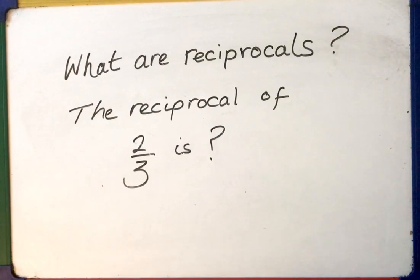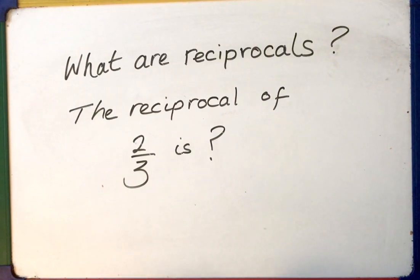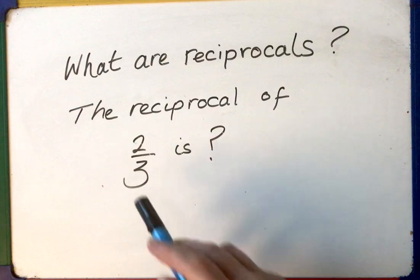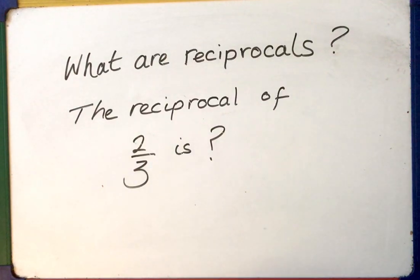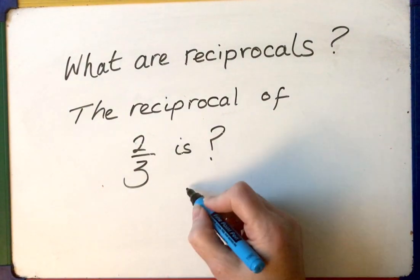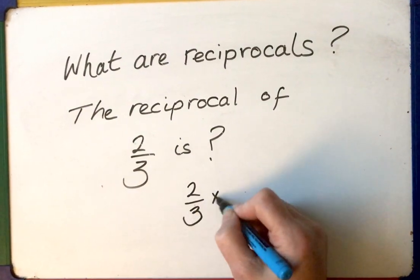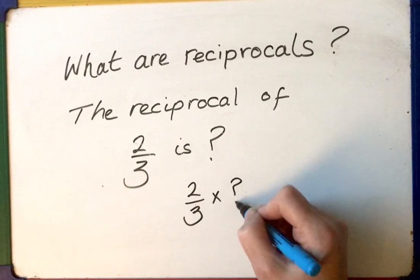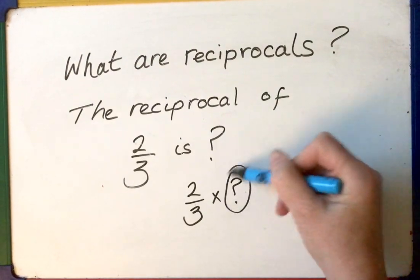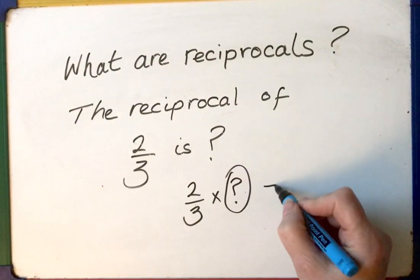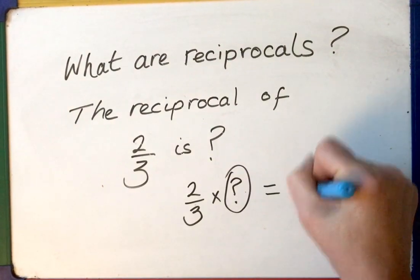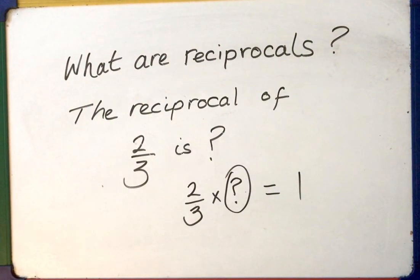The reciprocal of a number is simply the number which, when you multiply — so if I multiply two thirds by something, that being the reciprocal — the answer is one.